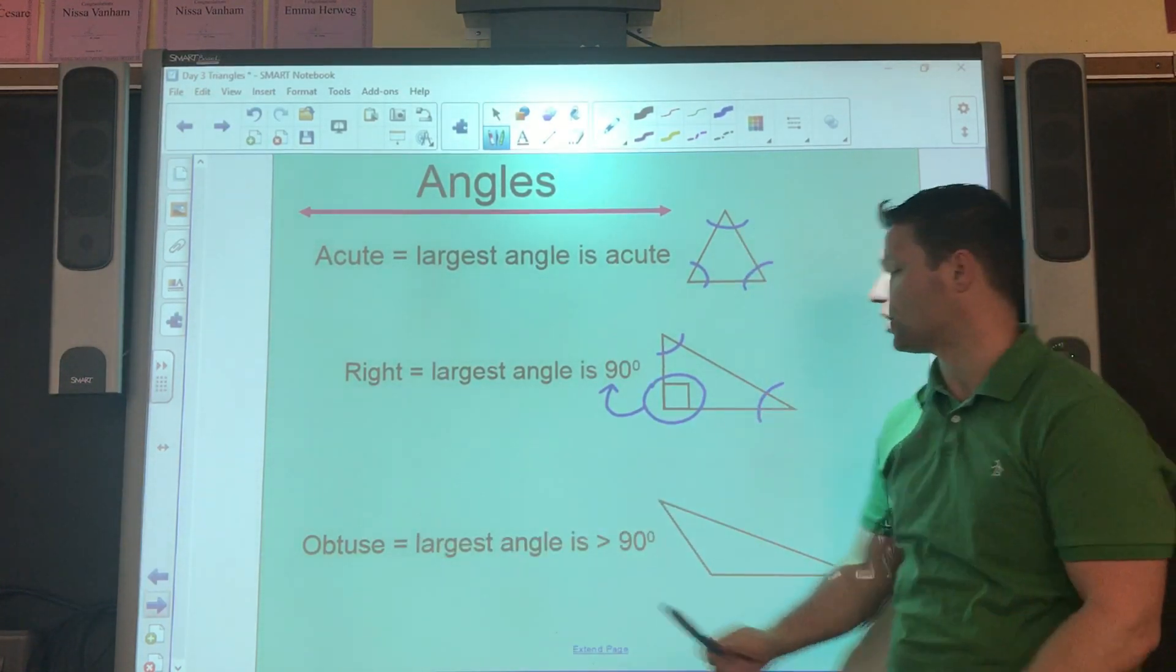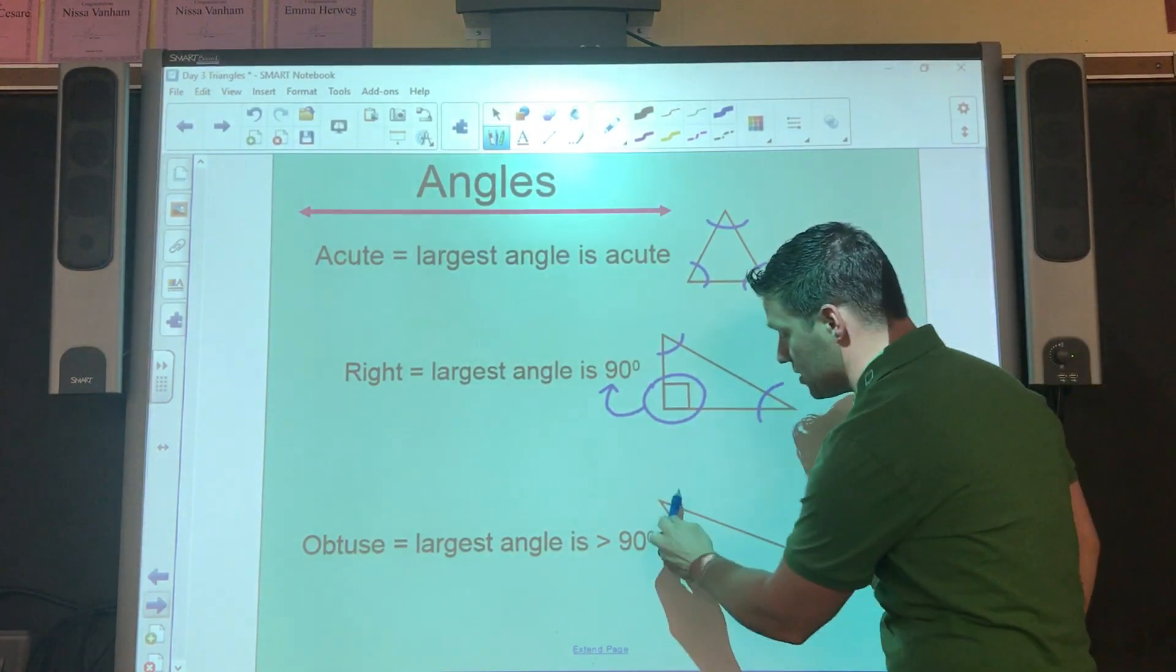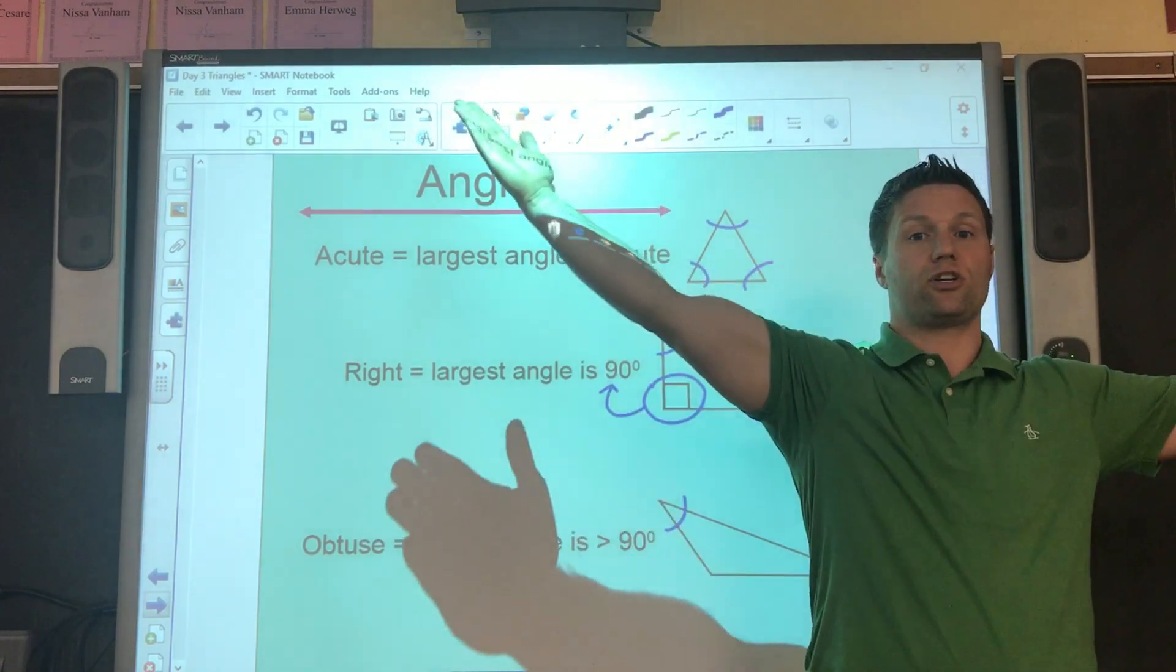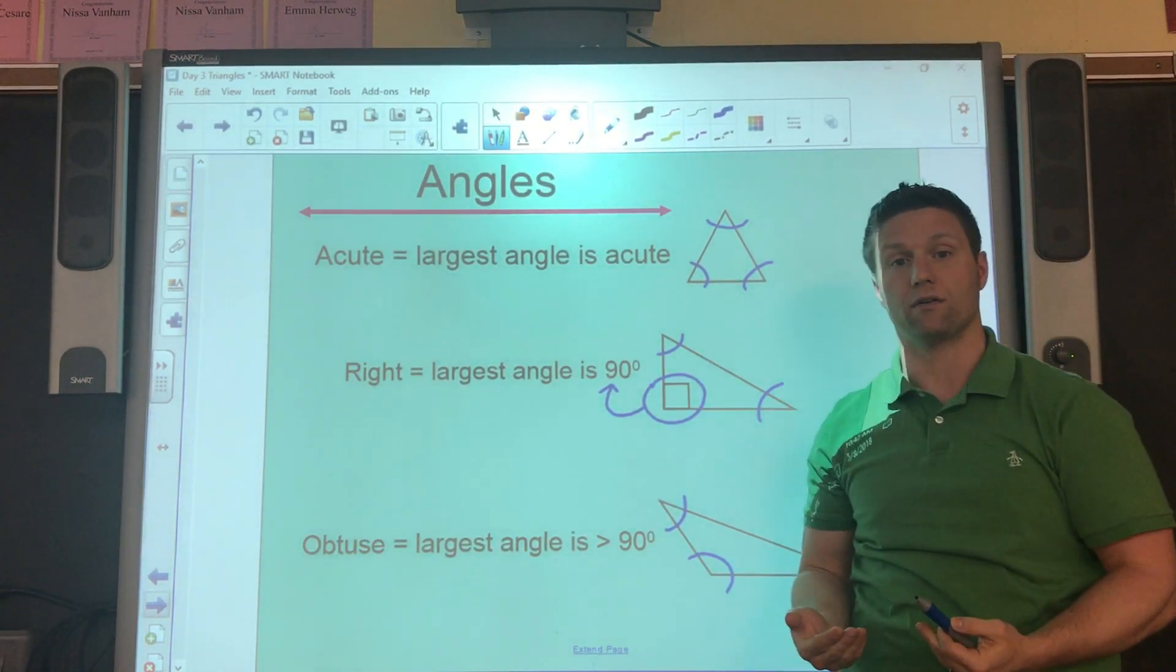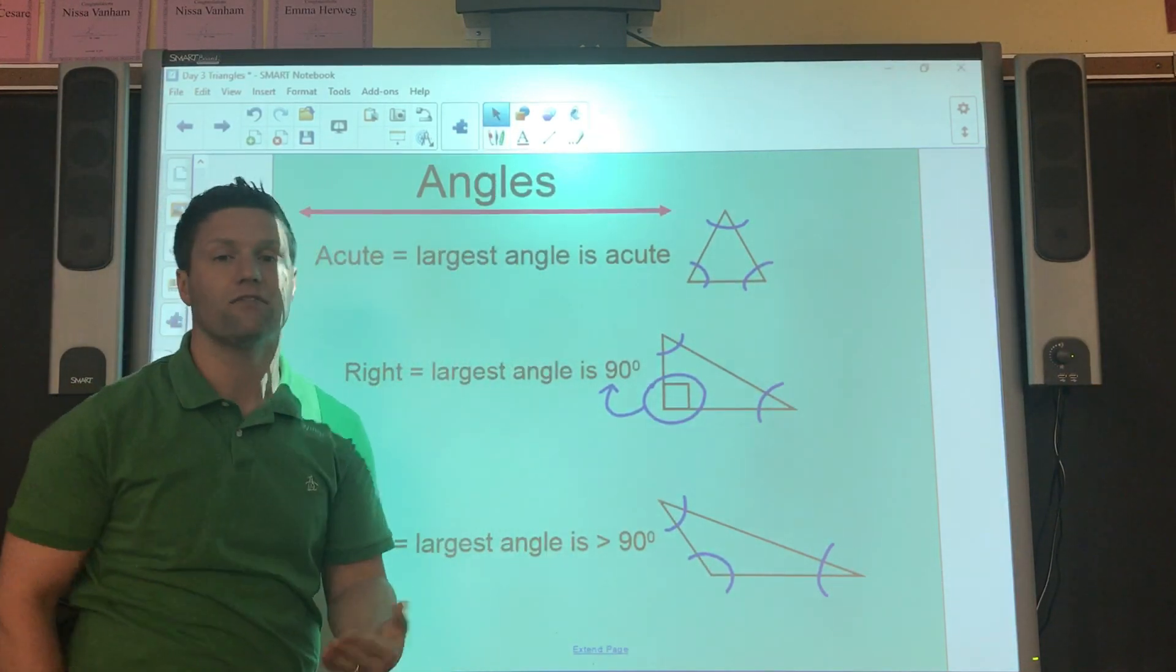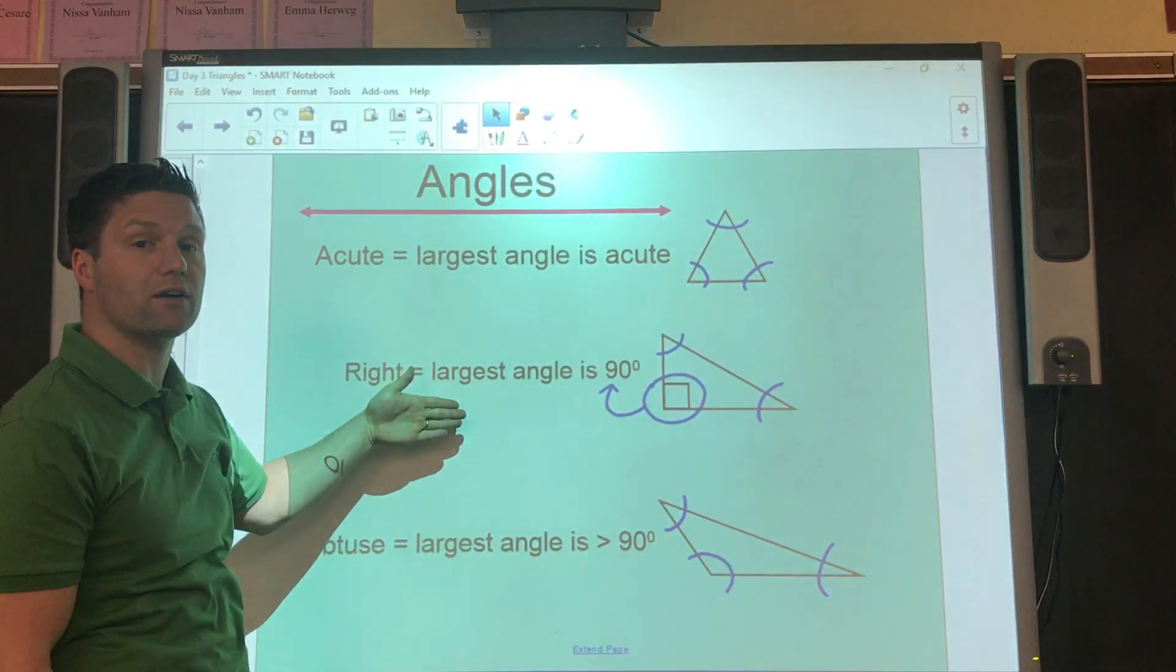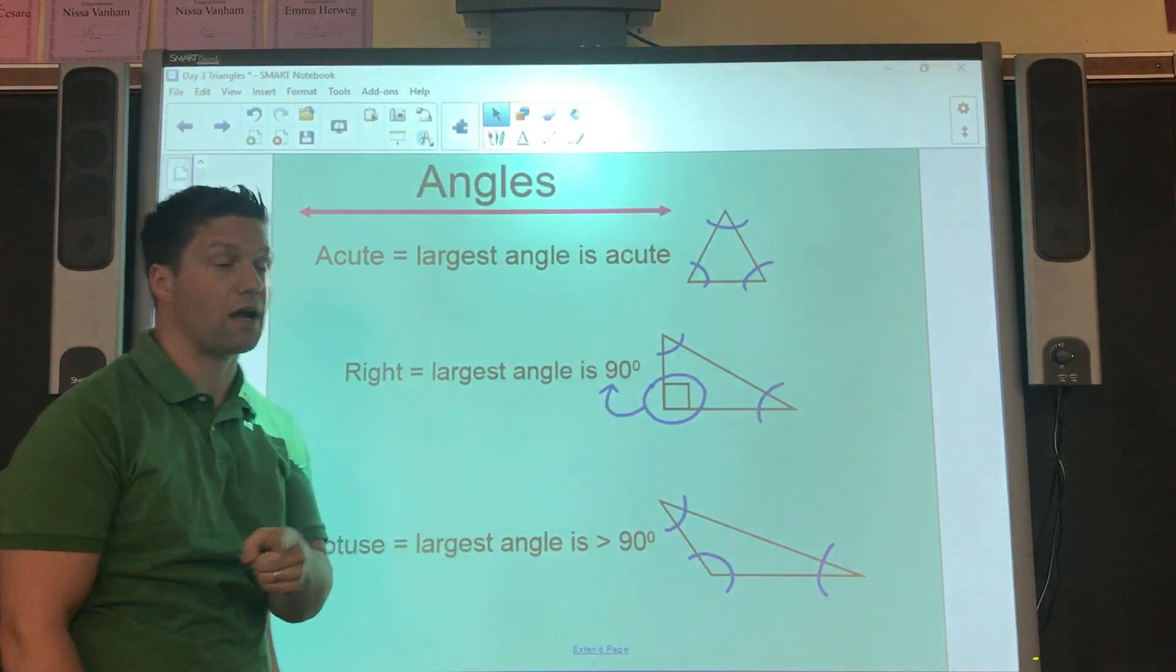And an obtuse triangle, when the largest angle is greater than 90 degrees. Let me see if I can go through these ones. This is an acute angle, this is an acute angle, but this one, it's not 90, it's larger than 90. We know that's an obtuse angle, therefore this is considered an obtuse triangle. So, those are the three ways where you can categorize, classify an angle, a triangle according to its angles. Acute, when its largest is an acute, when its largest is a right triangle, when its largest is an obtuse one. Let's keep going. Again, pause it if you have to. Make sure you got those pictures down.